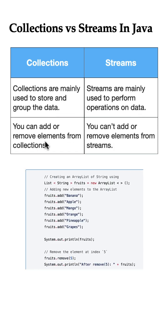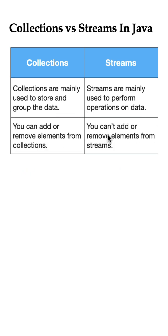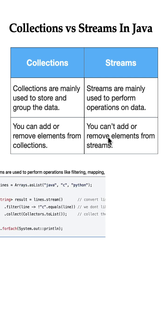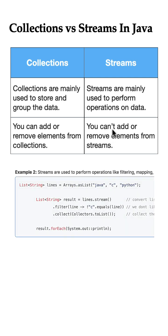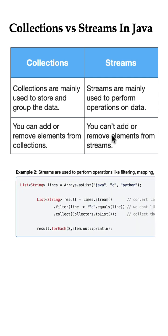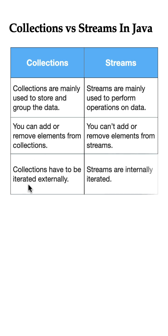You can add or remove elements from collections, but you can't add or remove elements from streams. A stream consumes a source, performs operations on it, and returns the result.